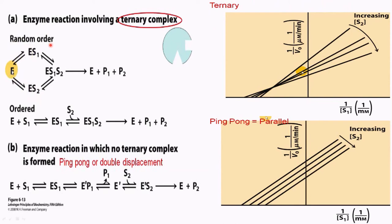One is random ordered and another one is ordered form. In case of random ordered ternary complex, the enzyme can bind to the first substrate or it can bind to the second substrate first. Like S1, the enzyme can bind to S1 first or S2, substrate 2, first. There is no order in this to produce a ternary complex.